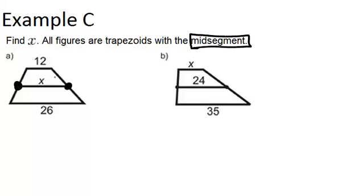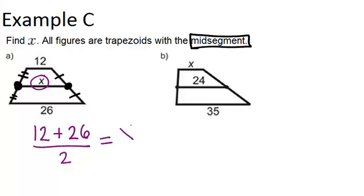So because that's a midpoint, it means that this segment would be congruent to this, and this congruent to this. Now the way it works is that the mid-segment, the length of the mid-segment, is the average of the length of the bases. So for the first one, since we're trying to figure out the actual mid-segment, we take the two bases, which are 12 plus 26, and average them in order to get x. So 12 plus 26 is 38, and 38 divided by 2 is 19. So that means x equals 19.